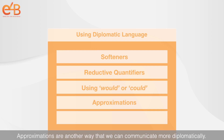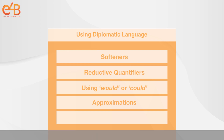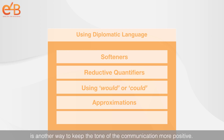Approximations are another way that we can communicate more diplomatically. They immediately reduce the impact of a potential misunderstanding or offensive situation. Changing a sentence like 'we were expecting the delivery today' to 'we were sort of expecting the delivery today' is another way to keep the tone of the communication more positive.